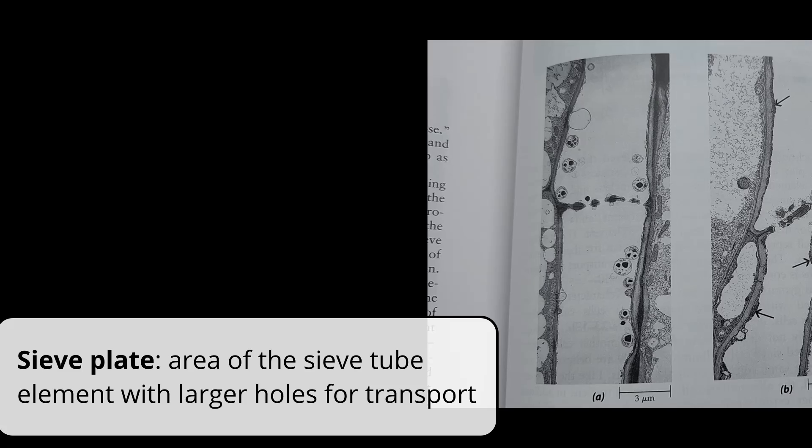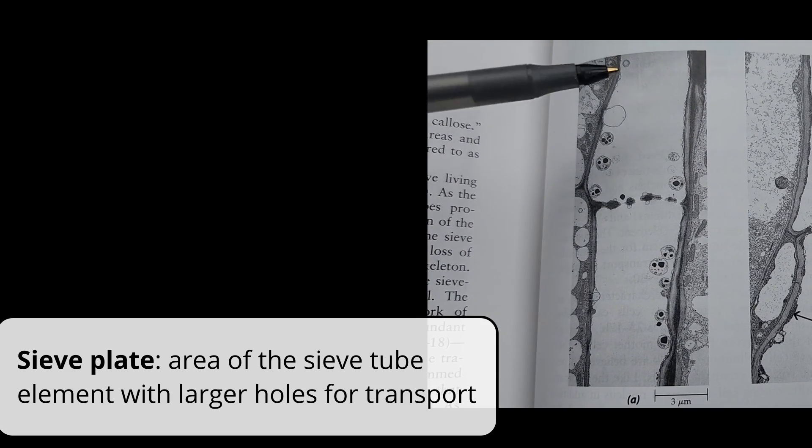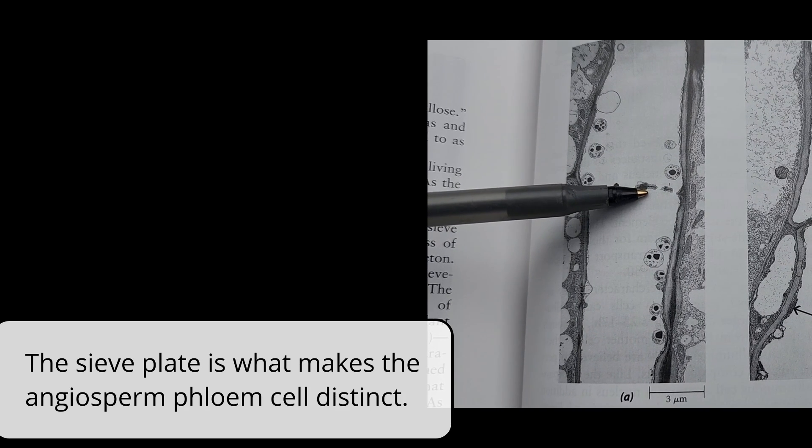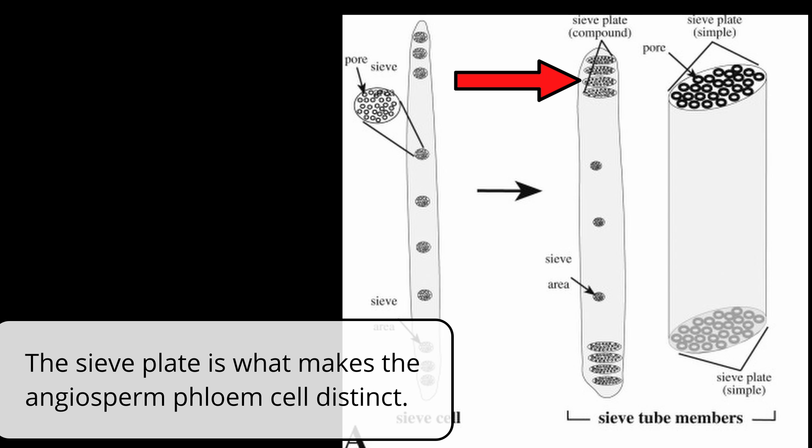There's parts of the cell that have larger than usual holes, usually at the ends, and this area is called a sieve plate. It's the existence of the sieve plate that separates the phloem in an angiosperm from the phloem in a gymnosperm.